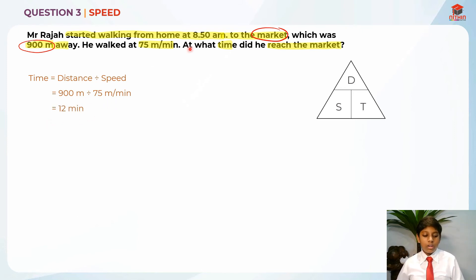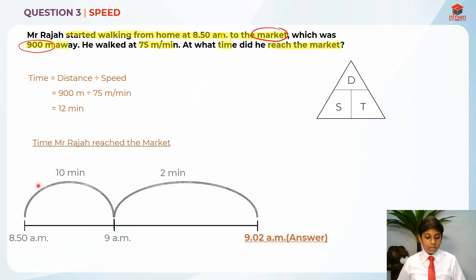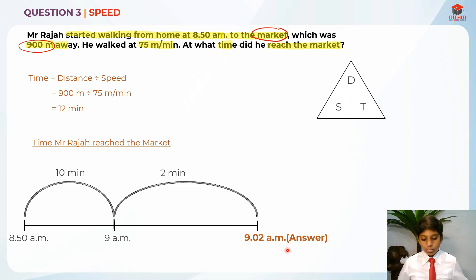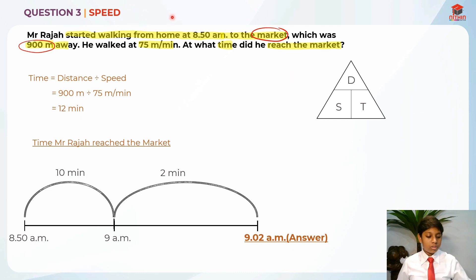We need to draw a timeline from 8.50am plus 12 minutes. I am going to draw a timeline here to find the time Mr. Raja reached the market. I separated the 12 minutes into 10 minutes and 2 minutes. From 8.50am, I add 10 minutes to get 9am first. Then I add the remaining 2 minutes, which gives us 9.02am. So the answer for question 3 is 9.02am.